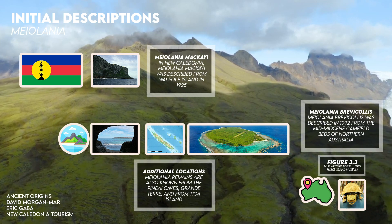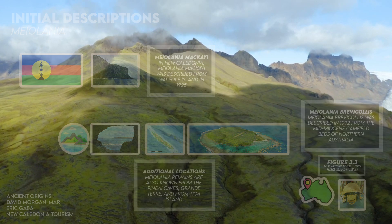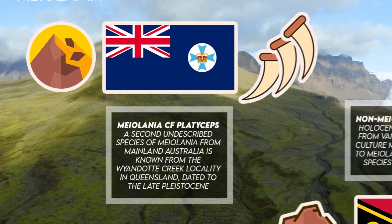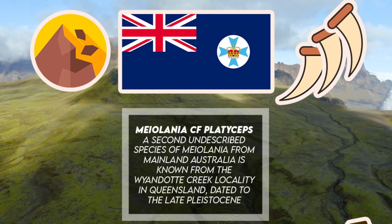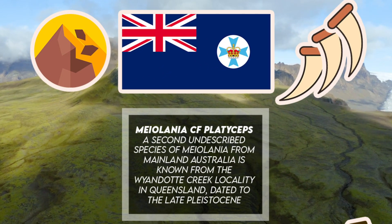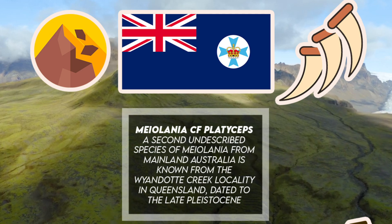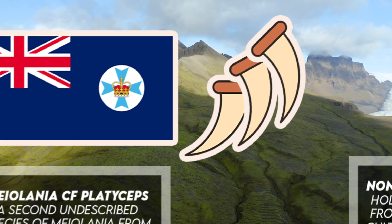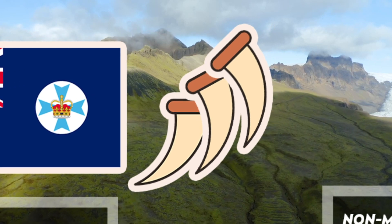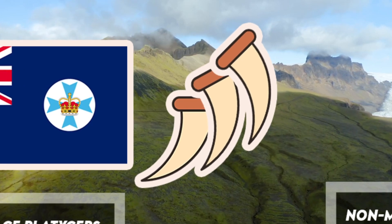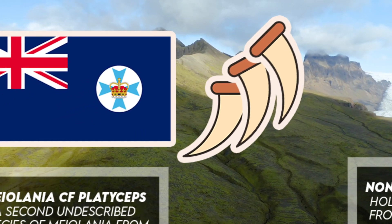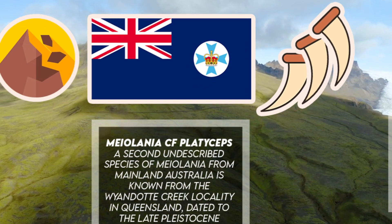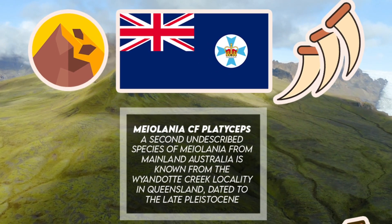A second undescribed species of Myolania from mainland Australia is known from the Wyandotte Creek locality in Queensland, dated to the late Pleistocene, consisting of three horn cores and a caudal vertebra, noted to be unusually large in size. This species is referred to as Myolania cf. platyceps, as the remains are most similar to Myolania platyceps but are not diagnostic beyond genus level.